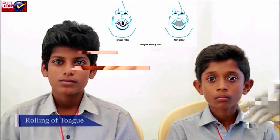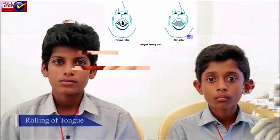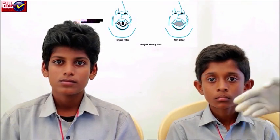Tongue rolling: It is the ability of a person to roll the tongue into a U-shape. The inability to roll the tongue is caused by an autosomal recessive allele. Both homozygous dominant and heterozygous individuals are able to roll the tongue, while homozygous recessive individuals are unable to roll the tongue.